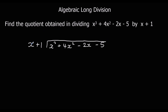We're going to say how many times does x go into x cubed. x cubed divided by x gives us x squared. We take that x squared and multiply it by both terms: x squared times x is x cubed, and x squared times 1 is x squared.